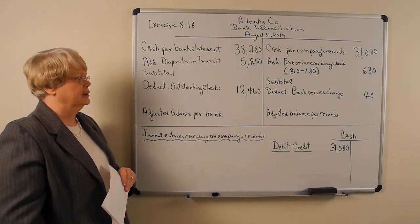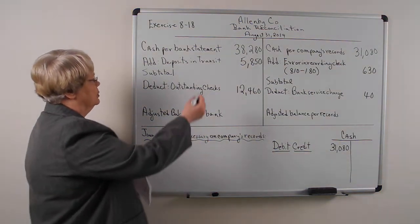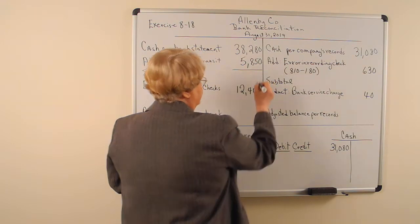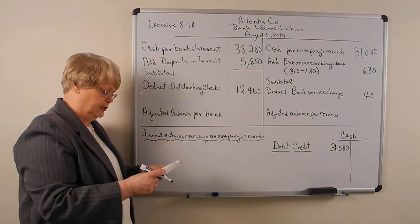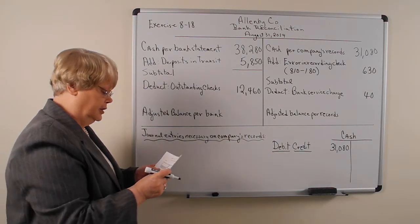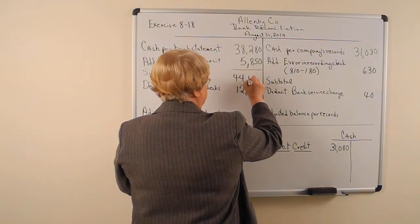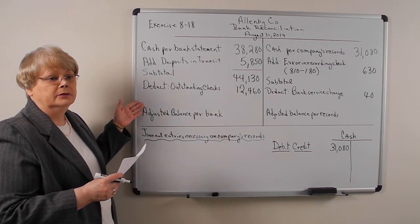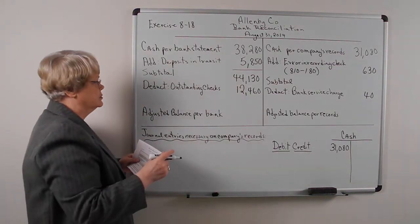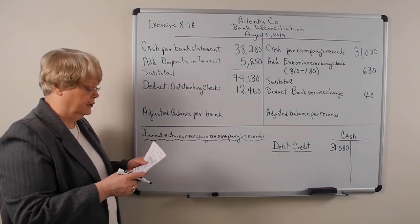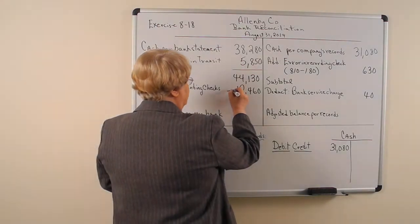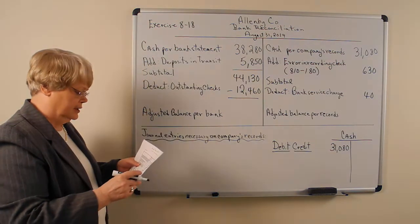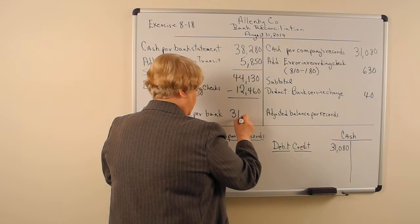Let's look at the reconciliation and put in the subtotals and totals. We add together the beginning cash balance plus the deposit in transit and any other items to add. The subtotal is $44,130. Then we deduct the outstanding checks. There could be other items, such as bank errors, but the only deduction we have here is the outstanding checks. Subtracting those from the subtotal gives us an adjusted balance per bank of $31,670.